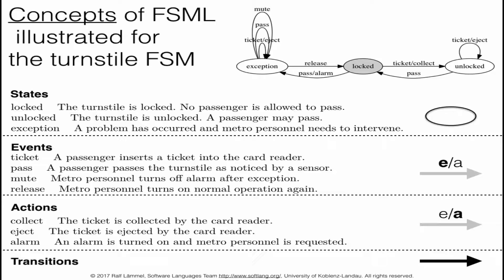Here is a summary of the language concepts at hand. Generally, with finite state machines we have states, events, actions, and transitions. For our turnstile FSM, we might have the states locked, unlocked, or an exceptional state. Events trigger transitions between states. Events include someone inserting a ticket or going through the turnstile. Actions include a ticket being collected, ejected, or an alarm being triggered.